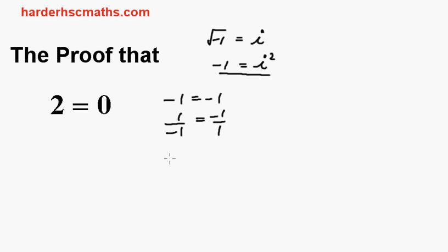Now we take the square roots to both sides. So we square root that and we'll square root that. That's perfectly okay. Now I can write that as the square root of 1 over the square root of minus 1 and that's equal to the square root of minus 1 over the square root of 1. Now the square root of 1 is just 1 and the square root of minus 1 is i and that's equal to i over 1.